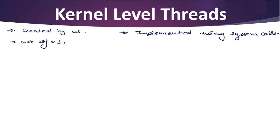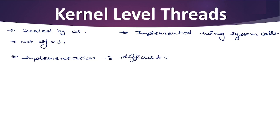If a kernel level thread is blocked, it does not affect the other threads because the operating system is managing them at the kernel level. The implementation of kernel level threads is more difficult because whenever a thread is created, it always needs permission from the operating system. Context switching time here is longer, and these threads can be scheduled independently.